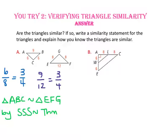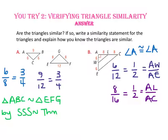In part B, triangle WAL and triangle EAC are overlapping triangles. They share angle A, and we compare the ratio of side AW to AE and side AL to AC. Since one angle of both triangles is congruent and the corresponding sides that include that angle are proportional, these two triangles are similar by the side-angle-side similarity theorem.